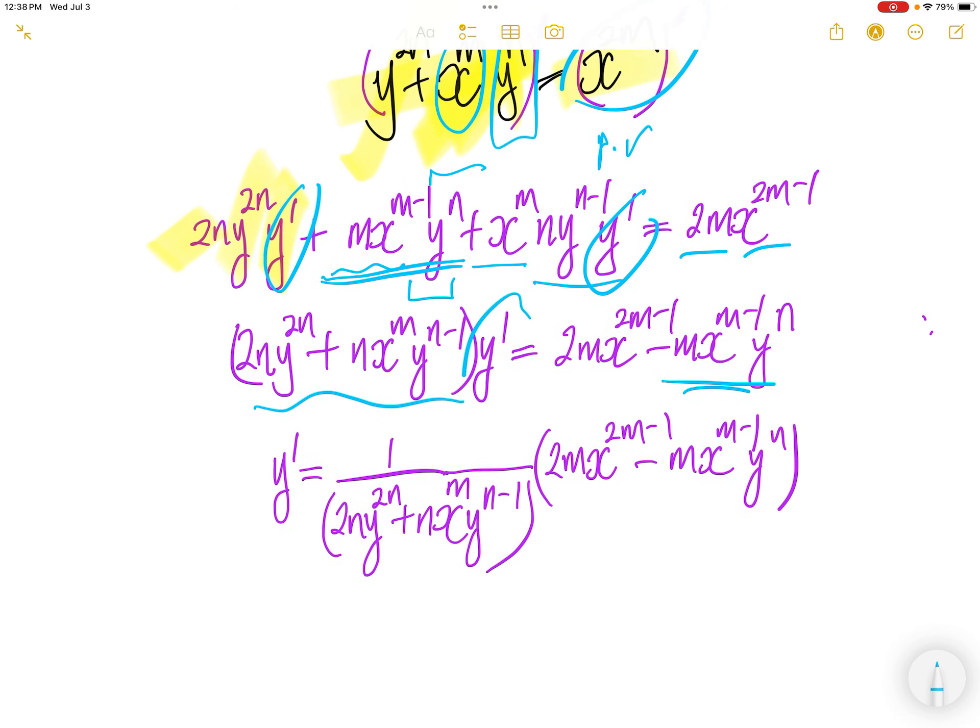To get y prime, you just divide both sides by this term. And then you divide the right hand side with the same term.